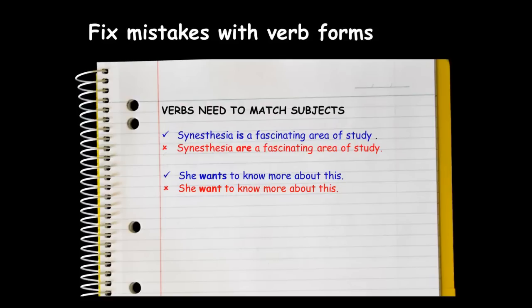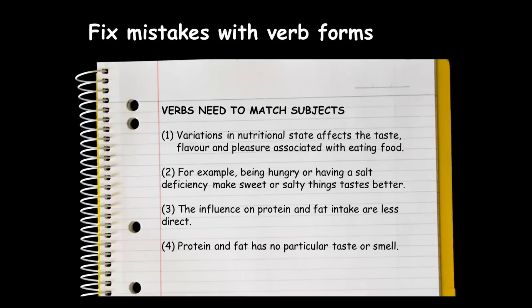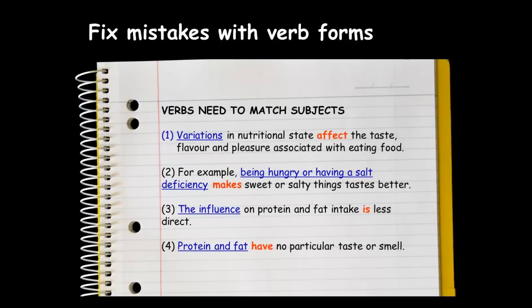Another common mistake is verbs that don't match their subjects. Go through your writing and make sure all your verbs agree with their subjects. Matching verbs to subjects can be tricky when subjects are long. An easy way of finding the main word in a long subject is to make a 'who' or 'what' question with the verb and the object — for example: 'What affects the taste variations?', 'What makes things better — being hungry or having a salt deficiency?', 'What is less direct — the influence?', 'What has no particular taste or smell — protein and fat?'